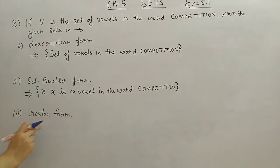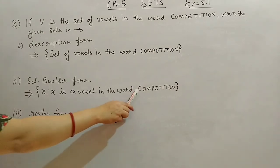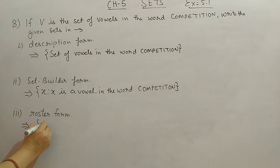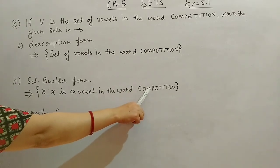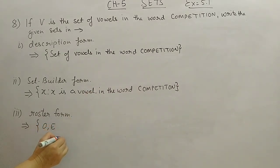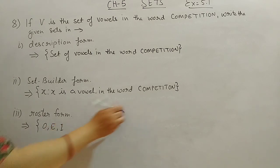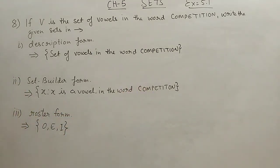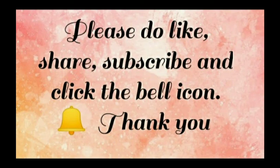Roster form: going through COMPETITION — C (not vowel), O (vowel), M (not), P (not), E (vowel), T (not), I (vowel), T (not), I (already), O (already), N (not). Roster form: {O, E, I}. This exercise is now complete. Hope you understood this exercise. Thank you for watching this video.